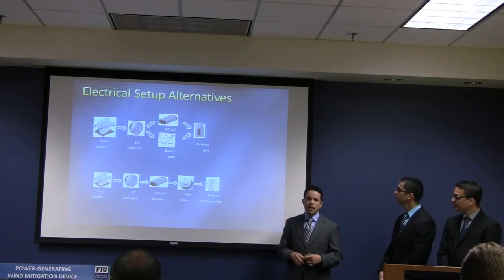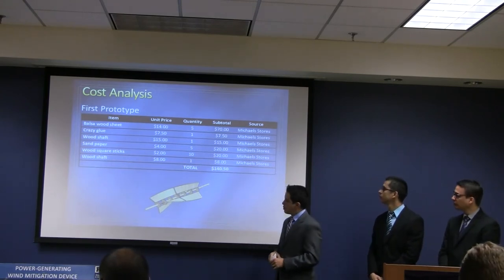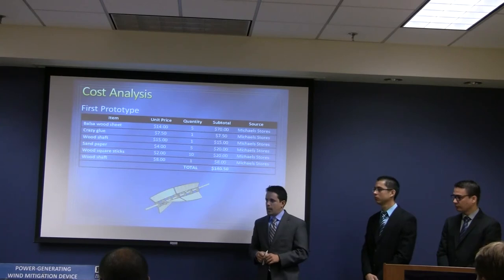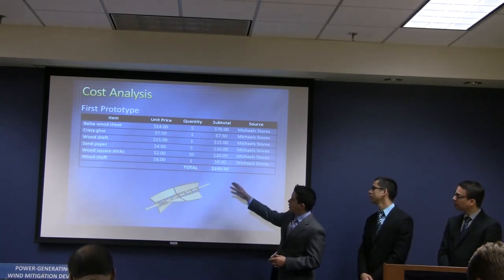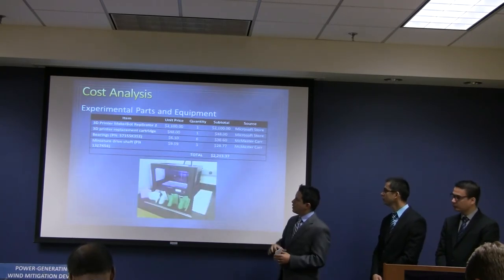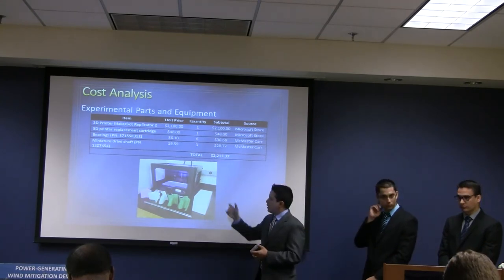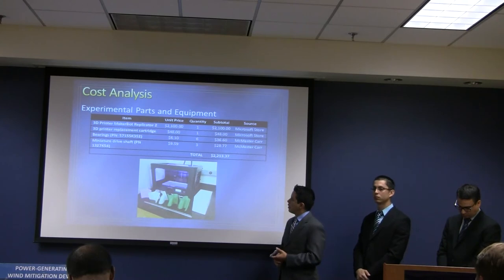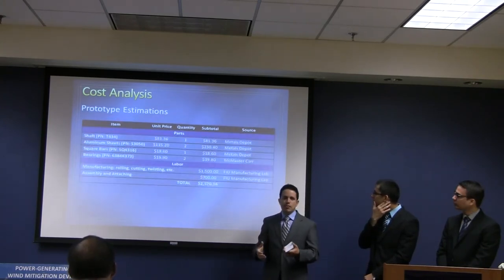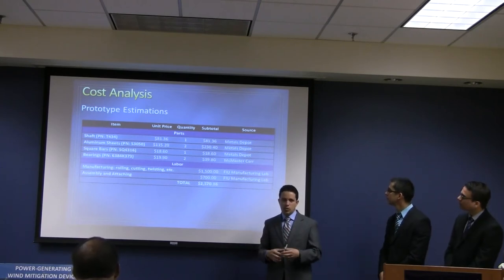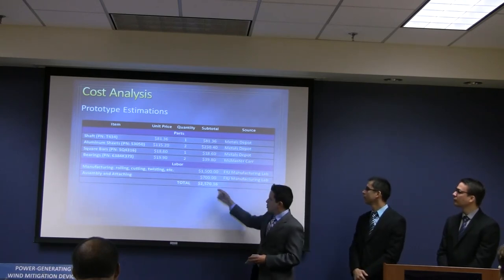Finally, this last analysis is about cost, divided into three parts. First, the initial model we used to develop this concept at the beginning of the project — all parts together came to about $140. Second, a cost analysis for all experimental parts and equipment, including a 3D printer we acquired, which came to about $2,200. And finally, a rough estimate of what the actual prototype could cost — between parts and labor, it came to about $2,500.